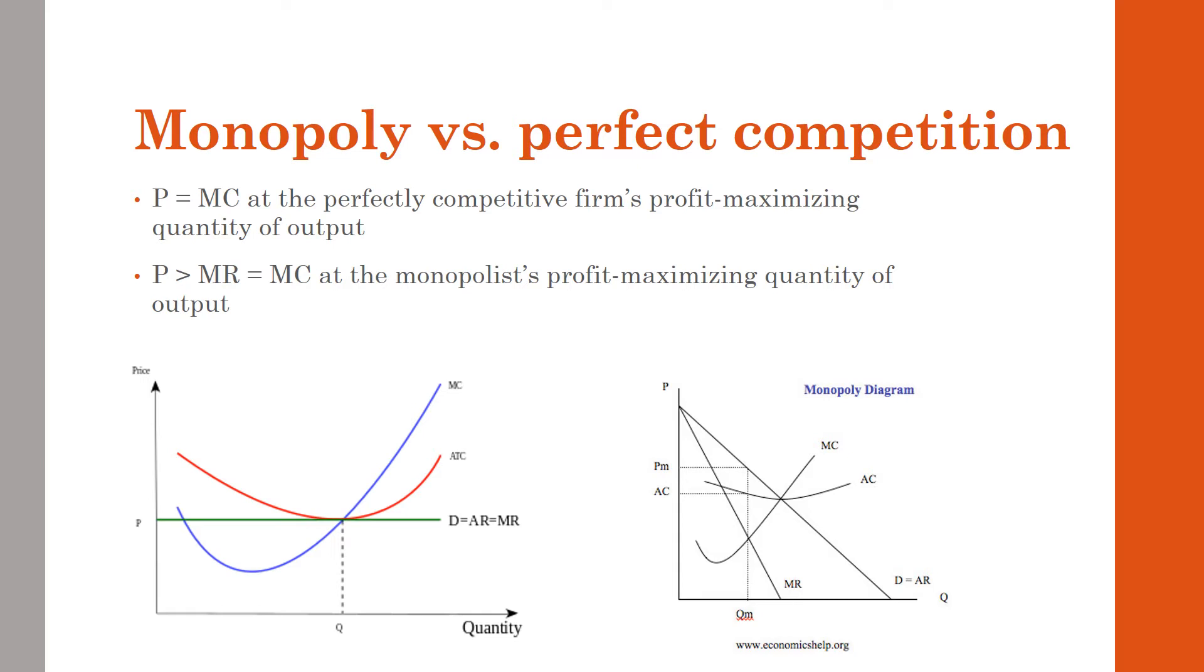For the monopolist, it is not that case. At QM, that is their optimal output of quantity, MC equals MR, but they're able to charge a higher price. So price is greater than marginal revenue, it is greater than marginal cost for the monopolist.